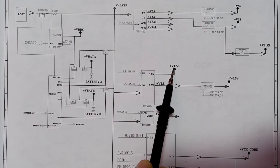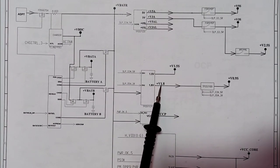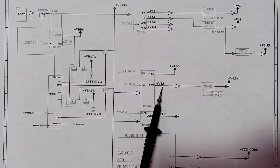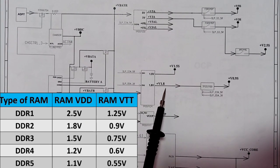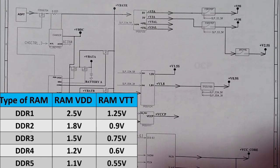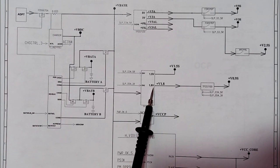The 1.5 volt is for chipsets, especially the North Bridge, and the 1.8 volt is the main working voltage for the RAM — specifically DDR2 RAM. Different RAM generations have different voltages: DDR1 is 2.5 volt, DDR2 is 1.8 volt, DDR3 is 1.5 volt, DDR4 is 1.2 volt, and DDR5 is 1.1 volt.